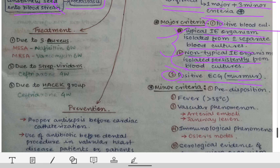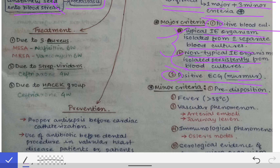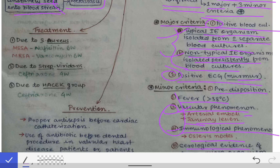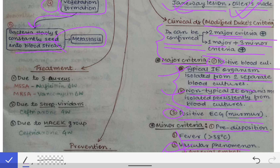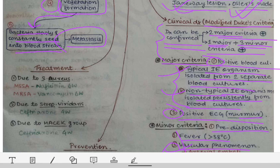The minor criteria include predisposition such as a prosthetic valve or prior heart surgery; fever greater than 38°C; vascular phenomena like arterial emboli or Janeway lesions; Osler's nodes — remembering that Osler's nodes are an immunological phenomenon while Janeway lesions are a vascular phenomenon; and serological evidence. If two major criteria or one major plus three minor criteria are fulfilled, the diagnosis is confirmed.